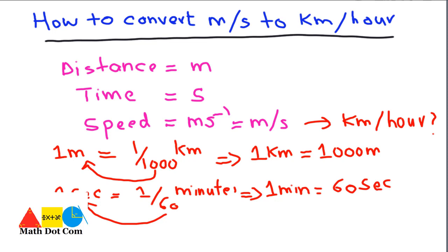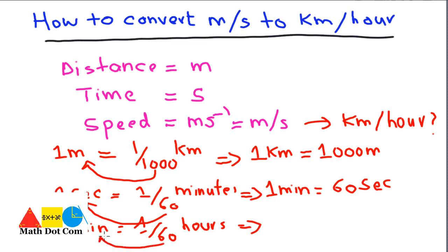To convert minutes to hours: one minute is equal to 1/60 hour. If you are asked how many minutes are in one hour, you move the 60 to the other side and get one hour equals 60 minutes.